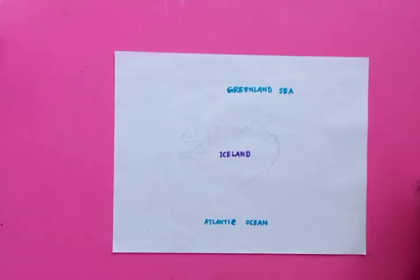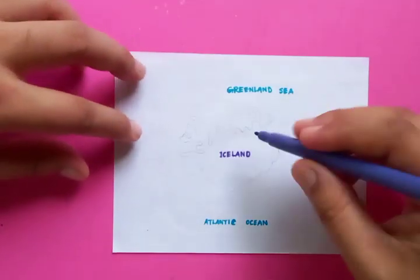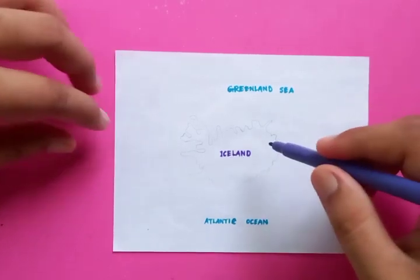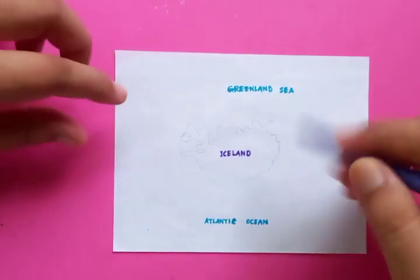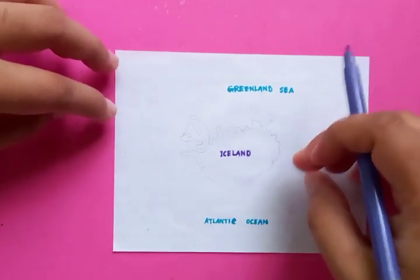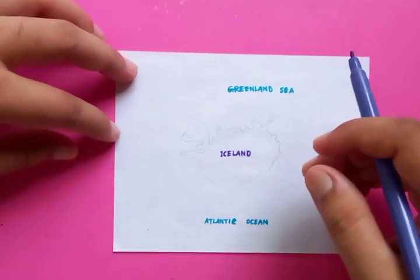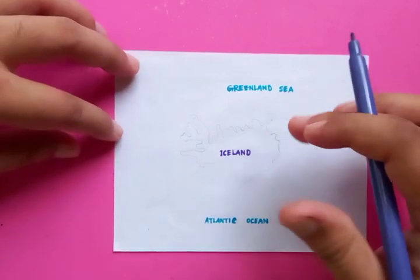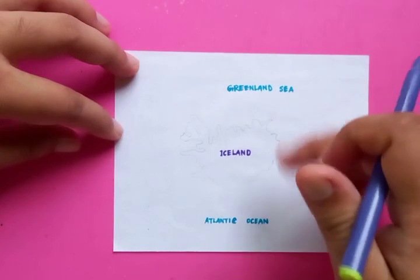Hi, how are you? I hope you're all fine today. Today we're going to draw the map of Iceland. Iceland is an island, and its location is on the northern side and the western side, near England, but it's in the Atlantic Ocean. Greenland is also very near the Canadian border.